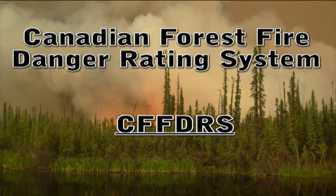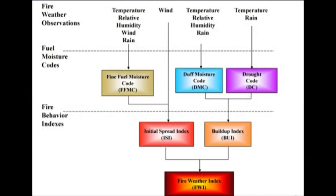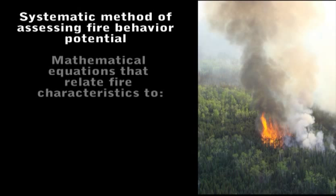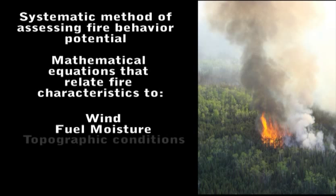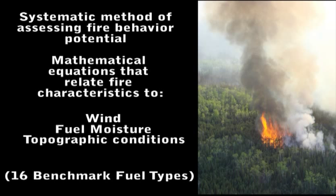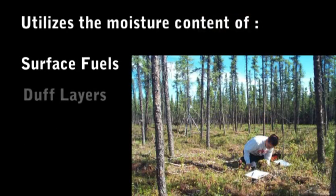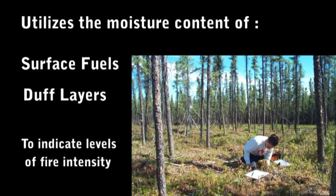Our community in Alaska utilizes the Canadian Forest Fire Danger Rating System, commonly referred to as CFFDRS, for both fire danger and fire behavior predictions. CFFDRS is a systematic method of assessing wildland fire behavior potential. It is a series of mathematical equations that relate fire characteristics to wind, fuel moisture, and topographic conditions for 16 benchmark fuel types. The system utilizes the moisture content of surface fuels and the moisture content of the mid and deep duff layers to indicate levels of fire intensity.